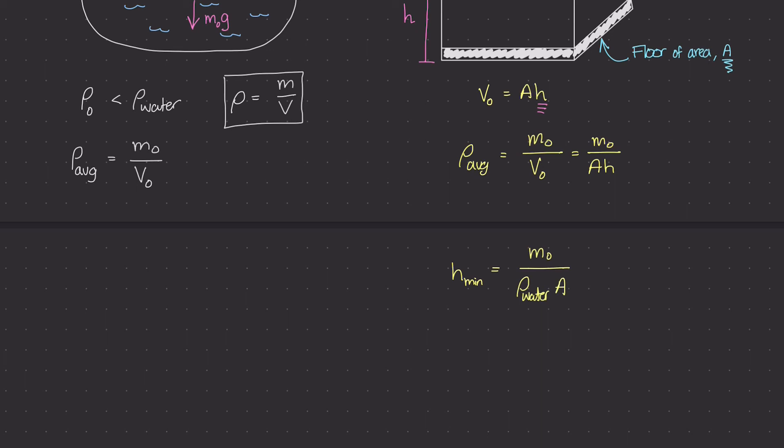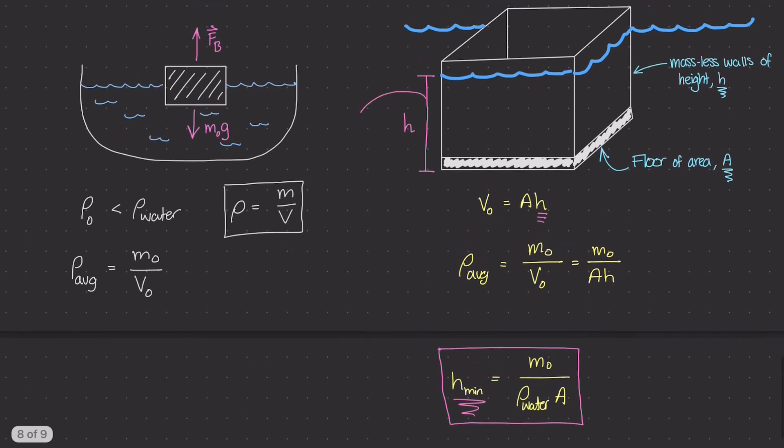So for this very simplified case, the walls of this boat need to be at least the mass divided by ρ of the water times the area of the floor. That will give us h minimum. That h minimum is this h right here. For this simple boxy boat, that is what h min needs to be in order for the boat to float.